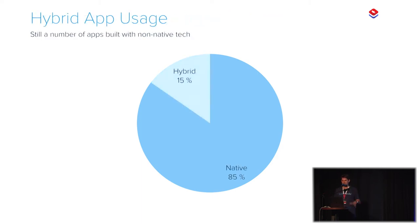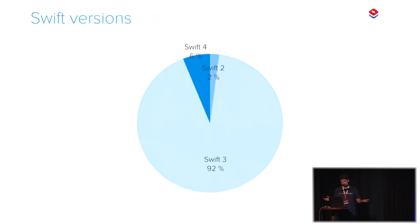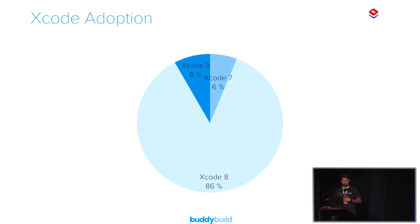Most people stick to native technology — about 15% are using React Native, Cordova, Ionic, or similar, but people are mostly sticking with native. It's mostly a mix of Objective-C and Swift, and it's quite impressive to see the uptake that Swift has had — already 25% of teams are using only Swift, no Objective-C at all. Most teams are using Swift 3, which was the latest stable version until a couple of days ago. It's not too surprising because it's the latest stable version that ships with Xcode, and we can assume these numbers will grow as people embrace Xcode 9 and migrate to Swift 4.